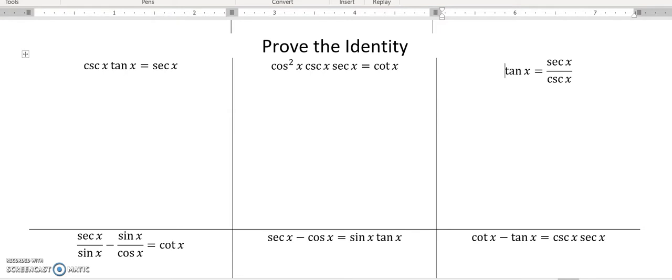A couple different tools when doing identities: one is to rewrite everything in terms of cosine. I know that cosecant is one over sine, tangent is sine over cosine, and I'm going to manipulate this to get secant. Notice conveniently that sine divided by sine is one, so I have one over cosine, which is secant, and that one's proven.